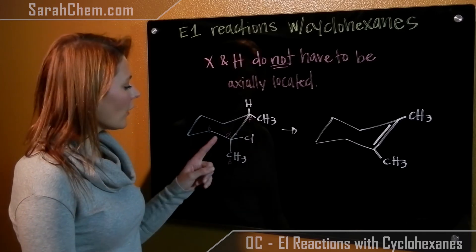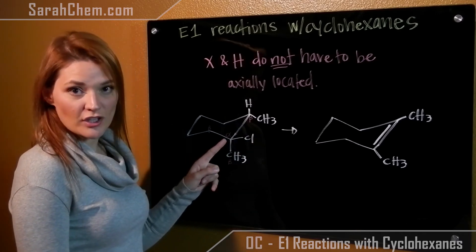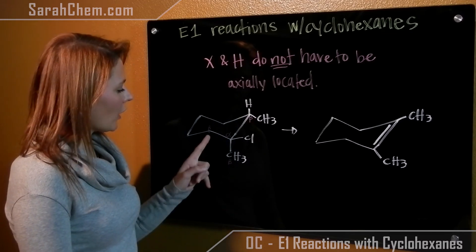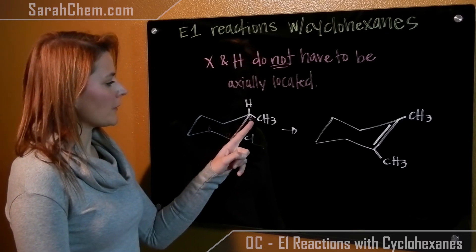Alpha has the chlorine attached directly to it. All adjacent carbons are beta: beta carbon, beta carbon, beta carbon.